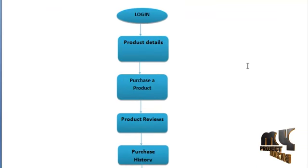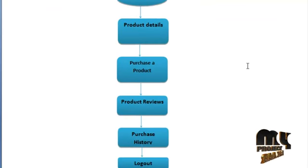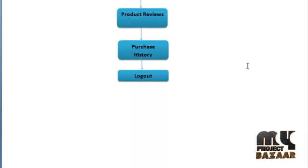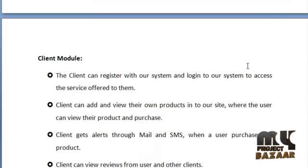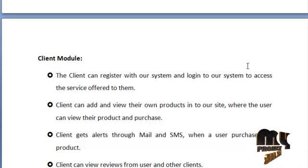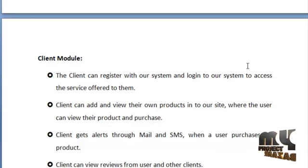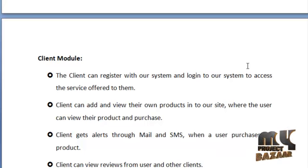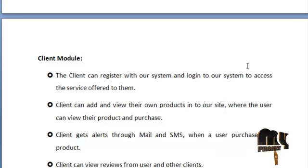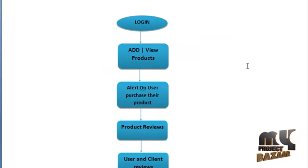The next model is the client model. The client can register and login to our system to access the services offered to them. The client can add and view their products on the website where users can view and purchase them. The client gets alerts through mail and SMS when a user purchases their product. Clients can also view reviews from users and other clients, as well as product descriptions.